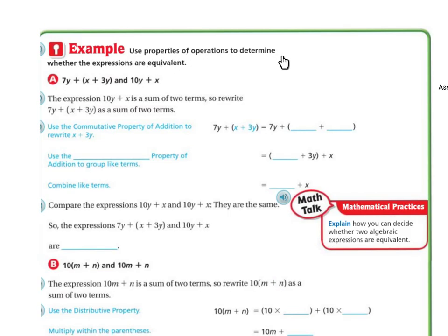Use properties of operations to determine whether the expressions are equivalent. So 7y plus, in parentheses, x plus 3y, and 10y plus x. So the expression 10y plus x is the sum of two terms, which is 10y and x, right? So rewrite 7y plus, in parentheses, x plus 3y, as the sum of two terms.